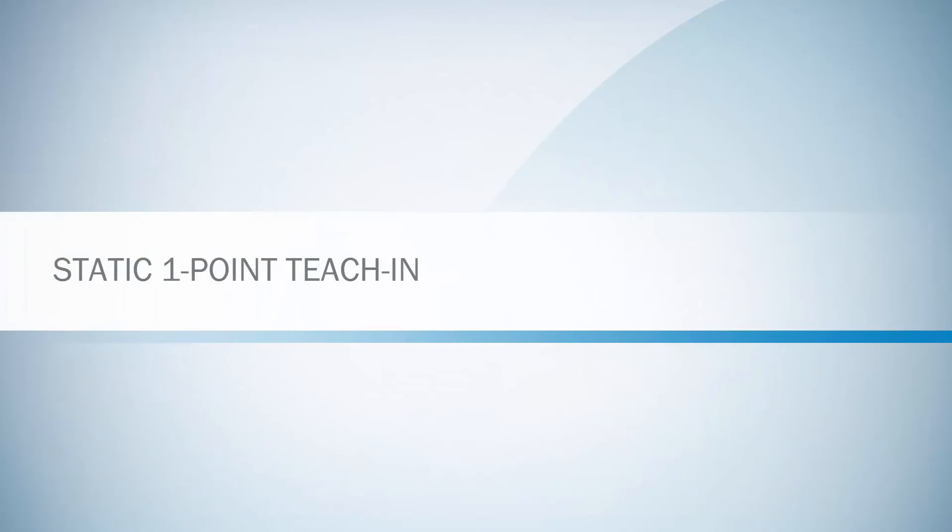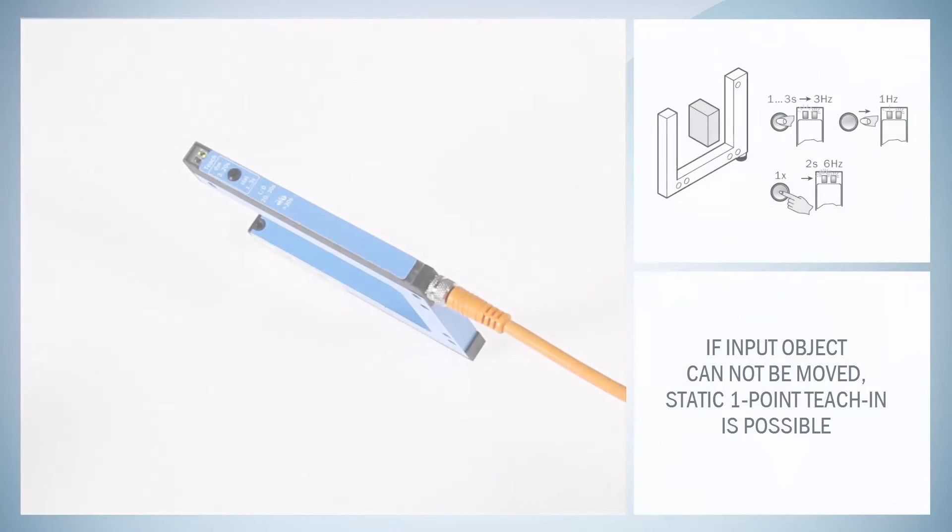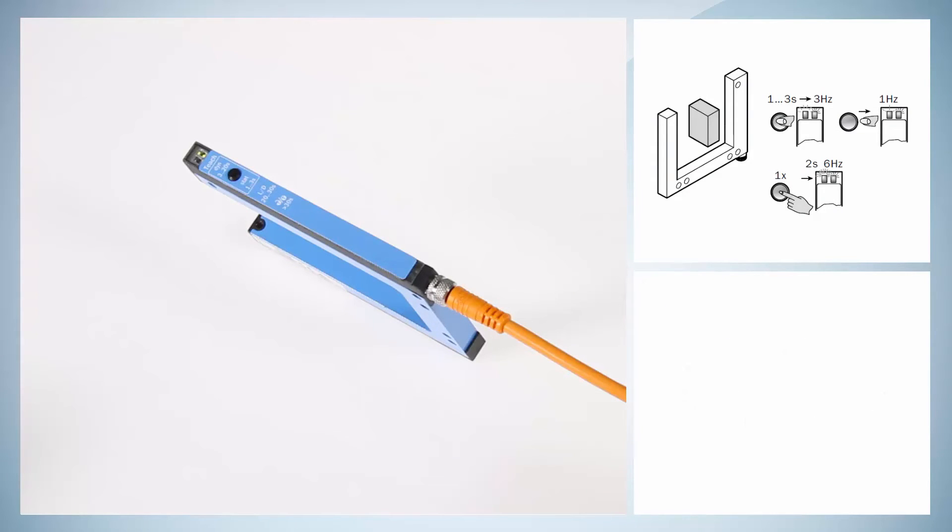The static 1-point Teach-In: If the application conditions do not allow the object to be moved, a 1-point Teach-In can be carried out. This Teach-In procedure has the lowest signal reserve and this is why a dynamic Teach-In should always be preferred if possible.